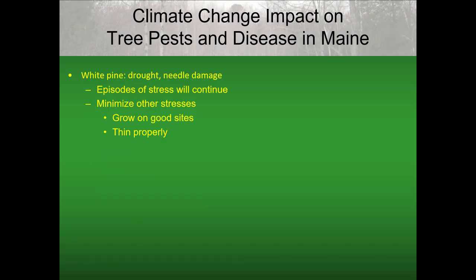So what to do about it? With white pine, where we can have problems with drought and needle damage, the episodes of stress will continue. To minimize other stresses, make sure pine is favored where it's on good sites for growing it, and especially thin properly. Maintain low densities to avoid competition — and these trees will be able to tolerate other stresses better.